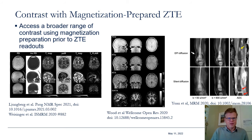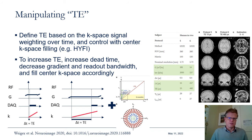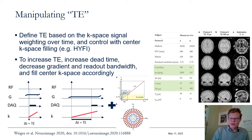It is also possible to manipulate the TE by using the HYFI technique — increasing the dead time and decreasing the gradient and readout bandwidth — to obtain multi-echo time images. A nice subtraction image showing myelination has been demonstrated with this approach.